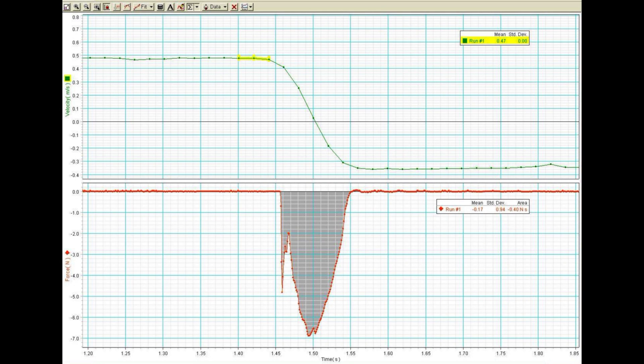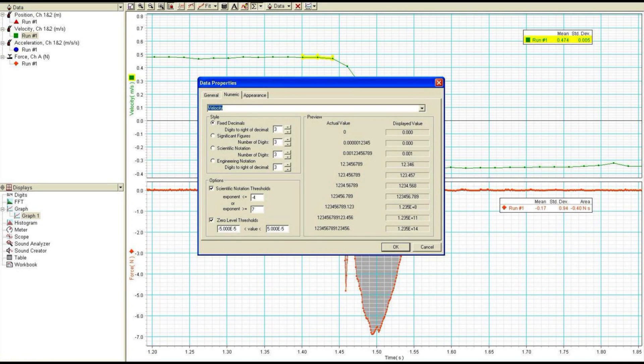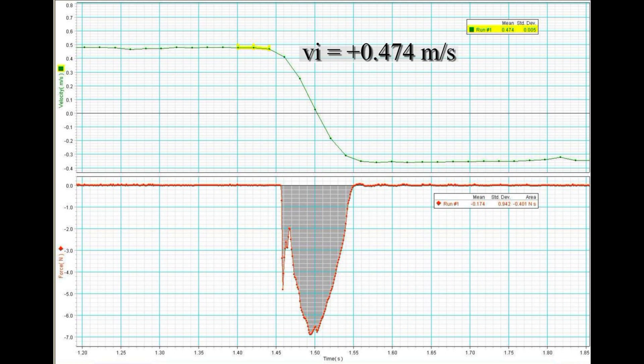The green curve above is the velocity versus time, and below we see the force versus time curve. Double-click on the velocity data in the upper left to change the numerical display to three figures after the decimal. The initial velocity is the mean of the velocity values highlighted in yellow just before the collision takes place.